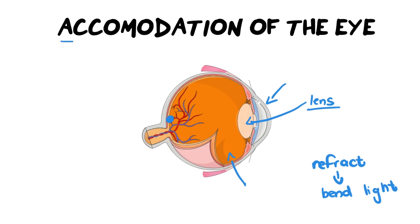What exactly is accommodation? Accommodation is when you are changing the lens shape to accommodate for more or less refraction. We're going to go into exactly how to explain that and what is going to get you full marks in your exam.